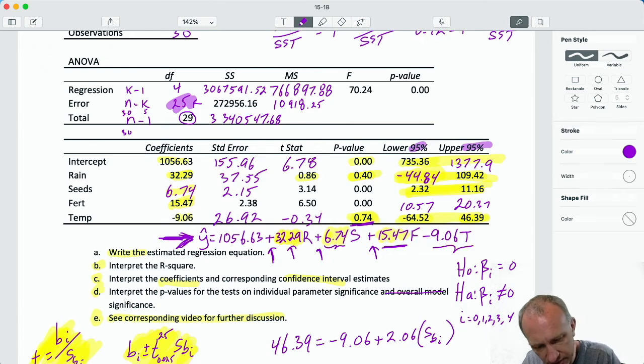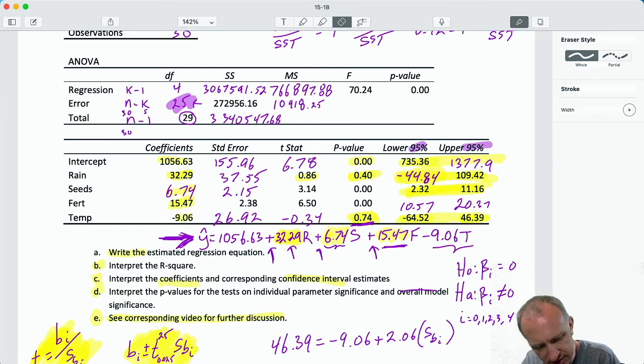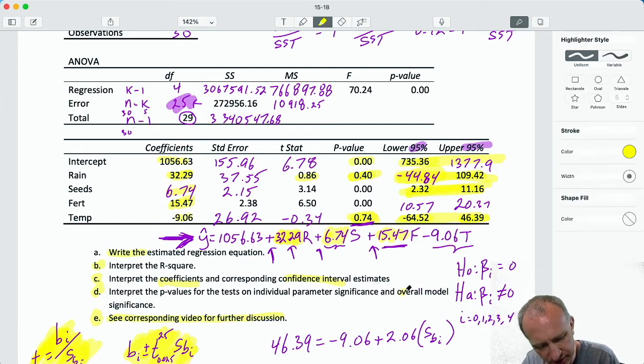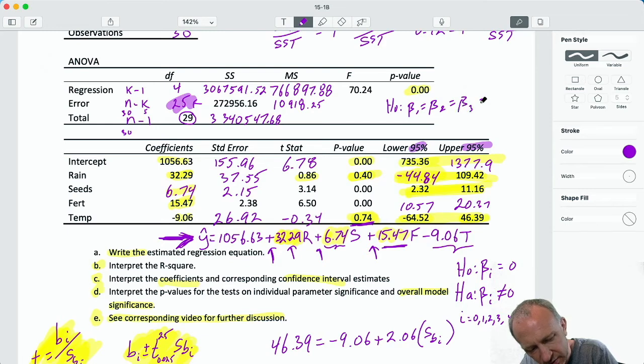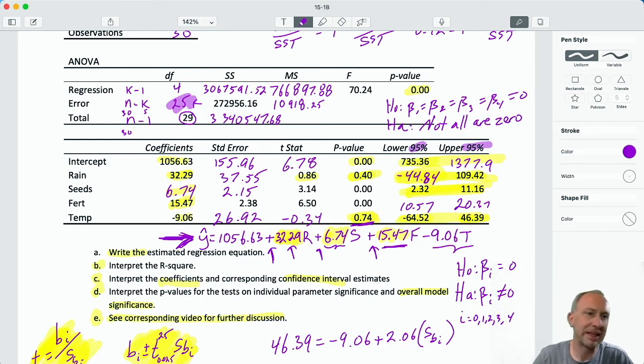Finally, the test for overall model significance, so that, my goodness, I want the highlighter, there we go, so that is our F test, which I can see up here. So that test, I'll just squeeze it in here, is testing to see whether or not our model, and the alternative, not all are zero, whether our model is statistically significant or not.